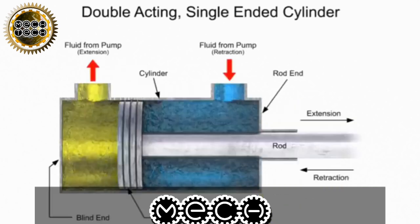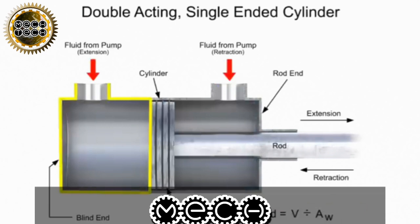The speed at which the piston extends and retracts is calculated using the volumetric flow rate divided by the area for the incoming fluid. Since each side of the cylinder has a different working area, each side experiences a different speed.